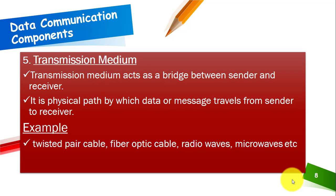The next component is the transmission medium. A transmission medium basically acts like a bridge between sender and receiver — it is the physical path through which data travels from a sender to a receiver. For example, a wire or cable between Device A and Device B is a transmission medium. Examples of wired transmission media include twisted pair cable, coaxial cable, and fiber optics. Radio waves and microwaves are examples of wireless transmission media.